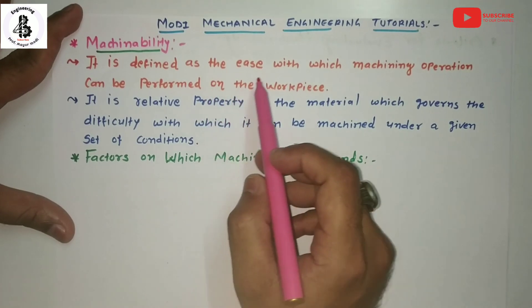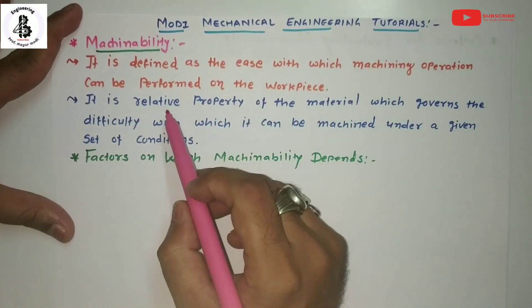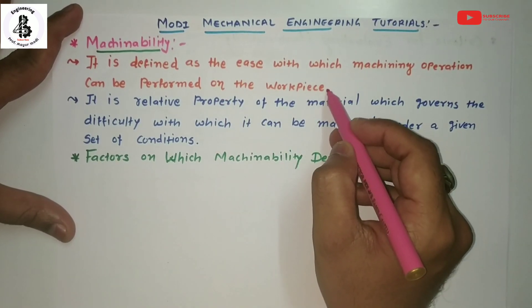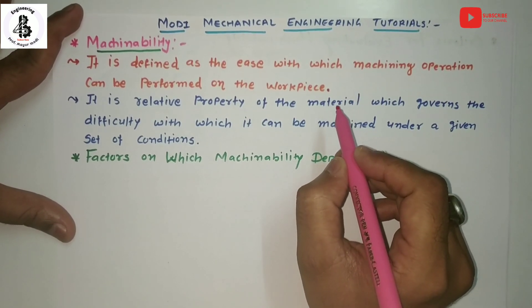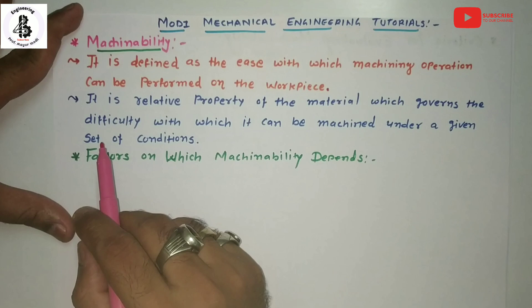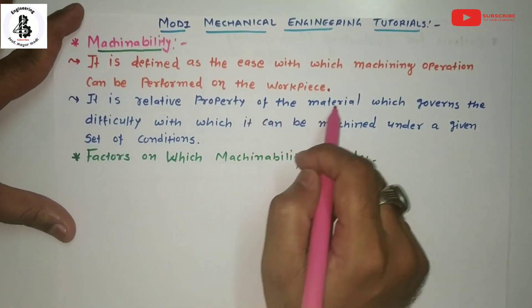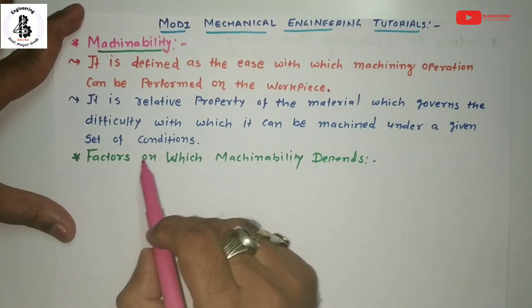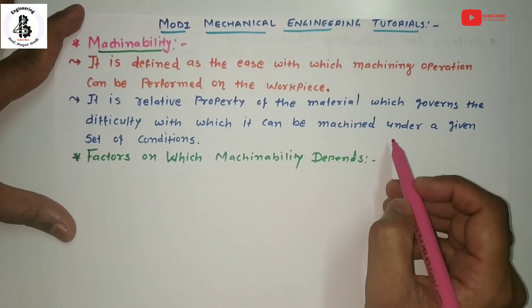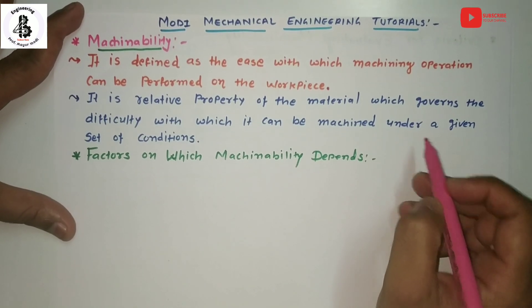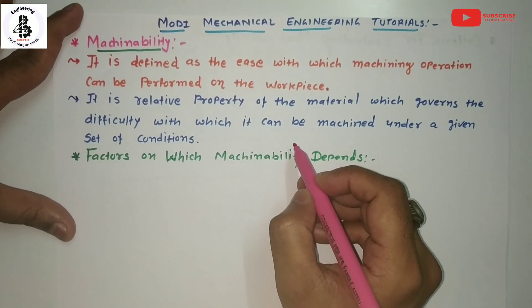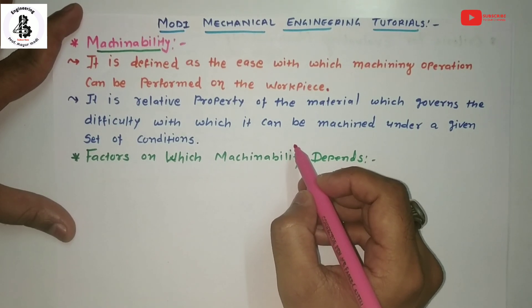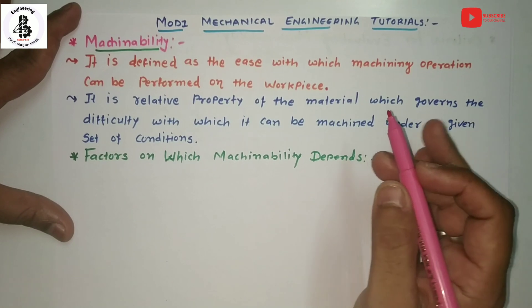By definition, machinability is defined as the ease with which machining operations can be performed on a workpiece. It is a relative property of materials which governs the difficulty with which it can be machined under a given set of conditions — those conditions depend on feed speed, depth of cut, hardness, and the structure of the tool and workpiece materials.